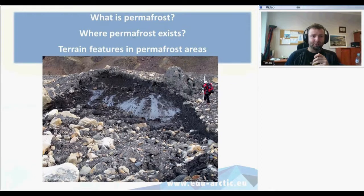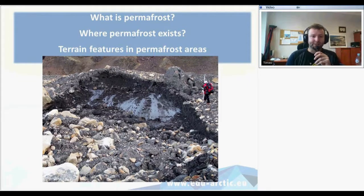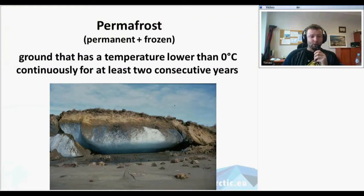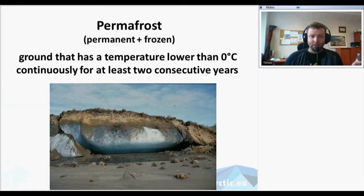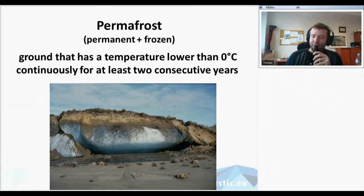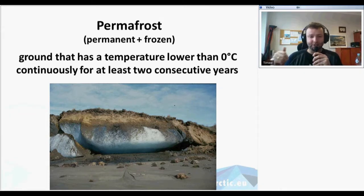I'll start with a short definition of frozen ground — permafrost. Then I'll show you where it exists, and then I'll show terrain features in areas where permafrost occurs. Permafrost means permanent and frozen: it's frozen ground that has a temperature lower than zero degrees centigrade continuously for at least two consecutive years. So there is permafrost where temperatures below zero stayed in the ground from the last winter through the summer until the next winter.